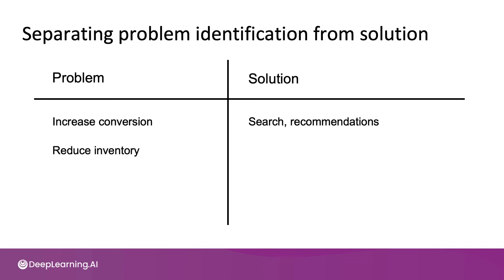Take the next problem of reducing inventory. You could imagine a demand prediction project to better estimate how many people buy something from you, so you don't purchase too many or too few, and have more accurate inventory in your warehouses. Or you may decide to come up with a marketing campaign to drive sales specifically for products that you bought too many of, steering more purchases of items sitting in your warehouse — and that could also reduce inventory. And there could be many other ideas for solutions.